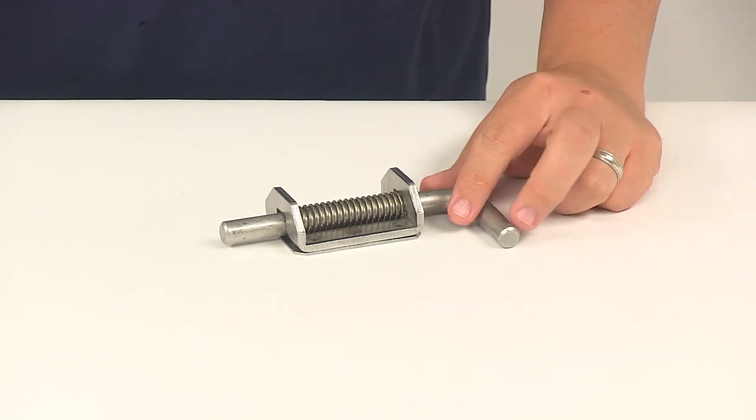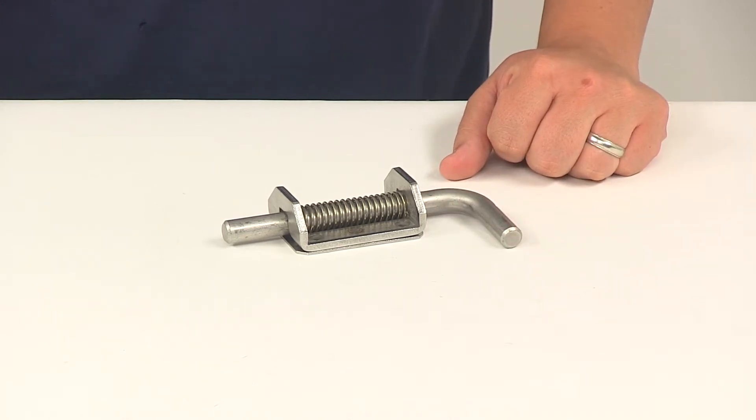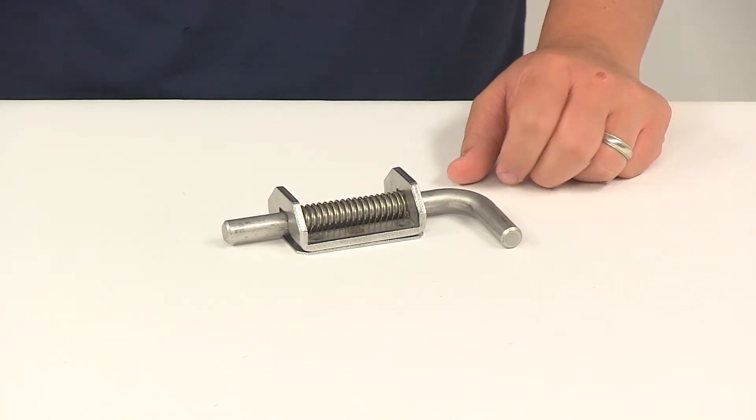Today we're going to be taking a look at the panel lock heavy-duty spring latch. This spring latch keeps large trailer tailgates, ramps, and other heavy-duty doors closed.